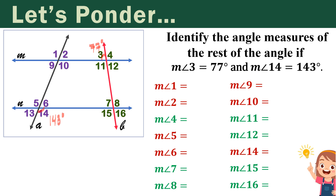Since we have 77 degrees for angle 3, let us focus first with transversal line B, and for the meantime disregard transversal line A. Since angle 3 is 77 degrees, that means angle 12 is 77 degrees as well. Since angle 3 and angle 4 have a linear pair or supplementary relationship, their sum should be 180 degrees. So 180 minus 77 gives us 103 degrees. Angle 4 and angle 11 are vertical angles, so angle 11 should be 103 degrees as well.